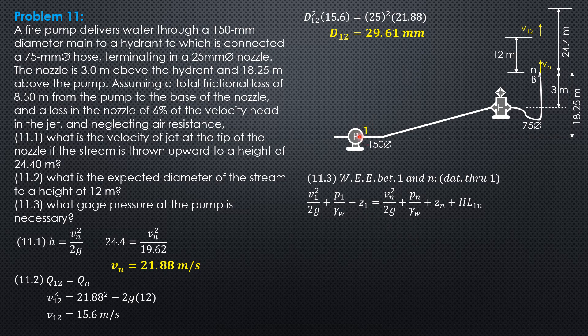Take note that head added by the pump is not included here because we are considering at the discharge side of the pump to n. There is no pump between the discharge side to n. To solve for V1 by continuity equation, Q1 equals Qn, so 150 squared V1 equals 25 squared 21.88. V sub 1 is 0.6078 meters per second squared divided by 19.62, so the velocity head at 1 is 0.01883 meter.